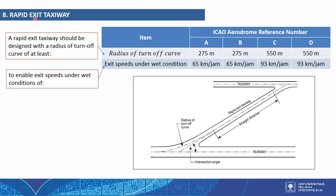The eighth component is rapid exit taxiway. There are two items: first, the radius of the turn-off curve — a rapid exit taxiway should be designed with a radius of turn-off curve at least the value specified based on the ICAO aerodrome reference code number (A to D) — and second, to enable exit speeds under wet conditions as specified in the table.